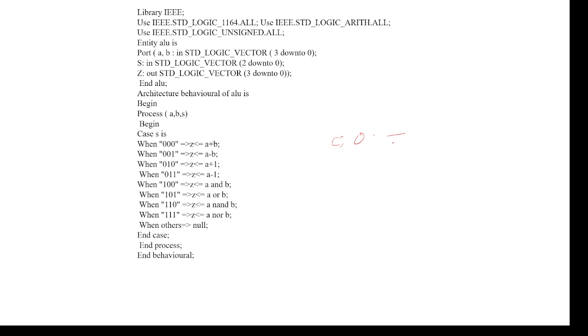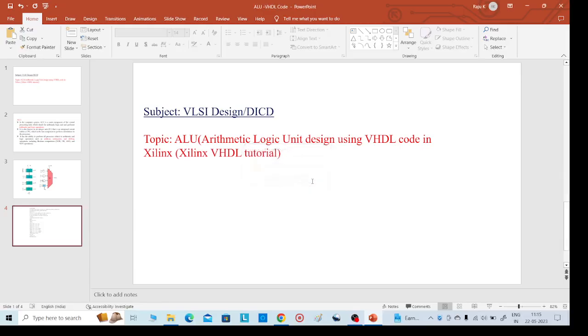Coming to the code, when the selection lines are 0 0 0 we perform A plus B. When the selection lines are 0 0 1 we perform A minus B. Like this we can write our required code and execute it easily.